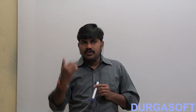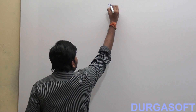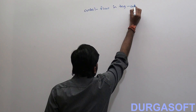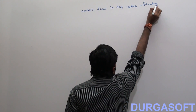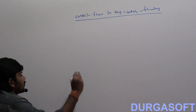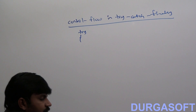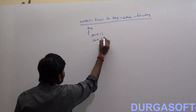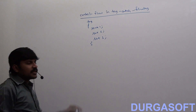Next I will explain control flow in try-catch-finally. If an exception rises, how we can handle it? If there is no exception, how is the control going to flow? We have to discuss this. Observe the try block — within it there are three statements: Statement 1, Statement 2, and Statement 3.